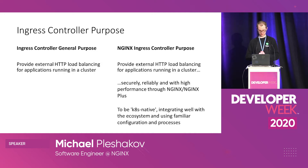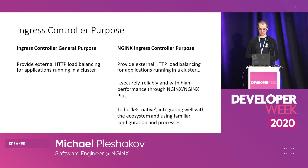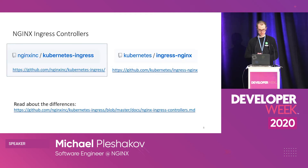Kubernetes has a rich ecosystem — tools like Prometheus, Helm, and OpenTracing — and we want our NGINX ingress controller to integrate with that ecosystem, not only providing load balancing but also integrating with Kubernetes tools. Just to clarify any confusion: there are two popular NGINX ingress controllers. There's one that we developed at NGINX, which is what I'll be talking about today, and there's one developed by the Kubernetes community hosted on the Kubernetes GitHub.